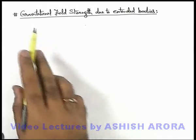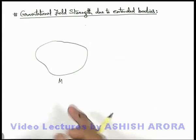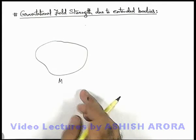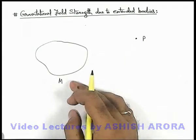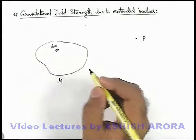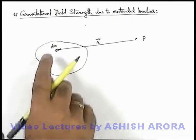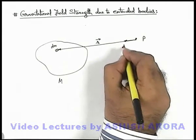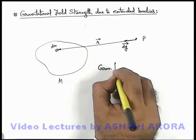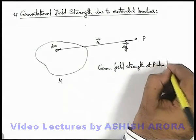In continuation, we can discuss gravitational field strength due to extended bodies. Say we are having an extended body of mass m. As we have discussed, every mass creates a gravitational field in its surrounding, so in its surrounding there also exists a gravitational field. Say there exists a point P in the surrounding and we wish to find out the gravitational field strength at point P. Then we can consider an elemental mass dm in it, and with respect to point P this dm is located at a position vector r. Then due to dm at point P we can say the gravitational field dG will exist in the direction towards dm.